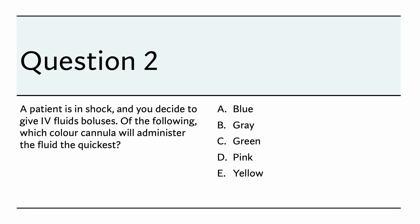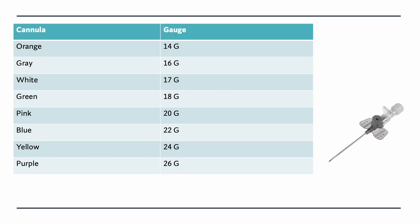The right answer is gray. Looking at this slide, you start with orange and end with purple. Orange is 14-gauge — the wider the gauge, the faster you give fluid, and as the number increases, the gauge becomes narrower. Gray is 16-gauge, green (commonly used) is 18-gauge, pink is 20, blue is 22, yellow is 24, and purple is 26. Yellow and purple are commonly restricted to pediatric patients.